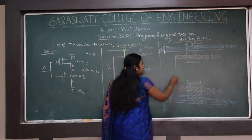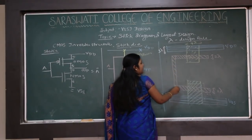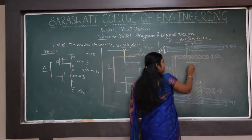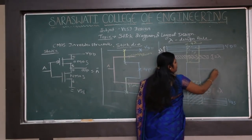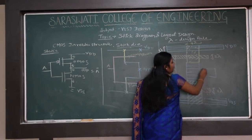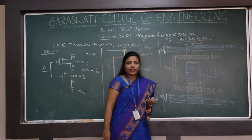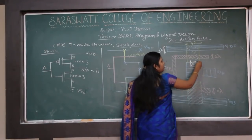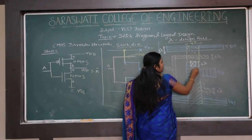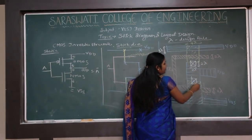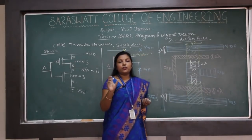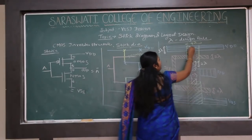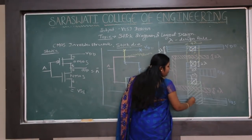Connect both gate terminals together with polysilicon to provide the input. For the output terminal, a metallic connection is obtained through these diffusion regions. Contacts are needed wherever two separate types of materials are connected together. Each contact should have a size of 2 by 2 lambda with a certain overhang space, and contacts are placed at all necessary connection points.